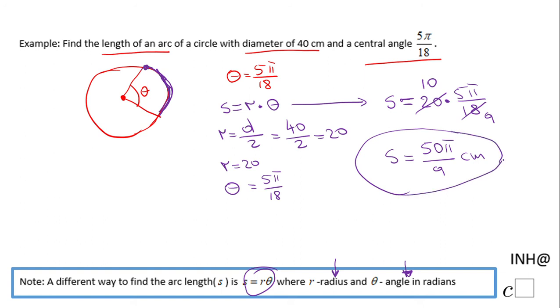This is the length of this arc. Of course, this can also be done by changing 5π/18 to degrees. That would be 5 times 180 divided by 18, which is 50 degrees. Then you can use proportions if you want to do it that way. That's also going to give you the same answer.